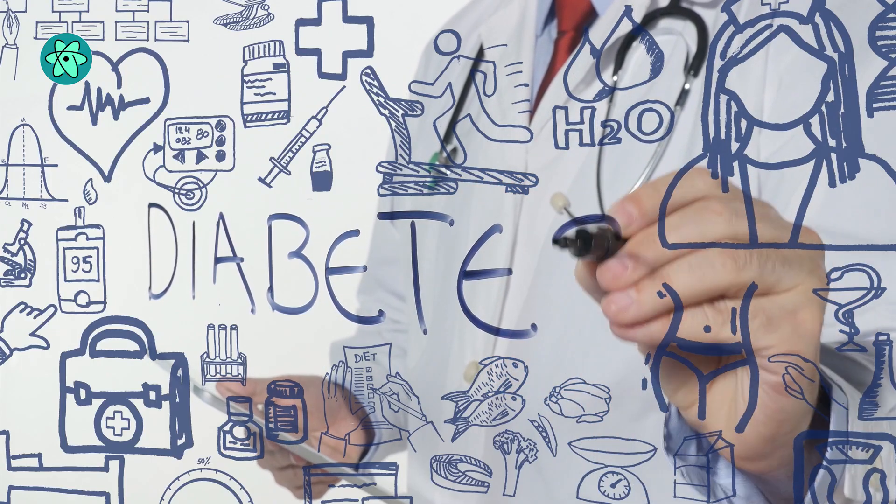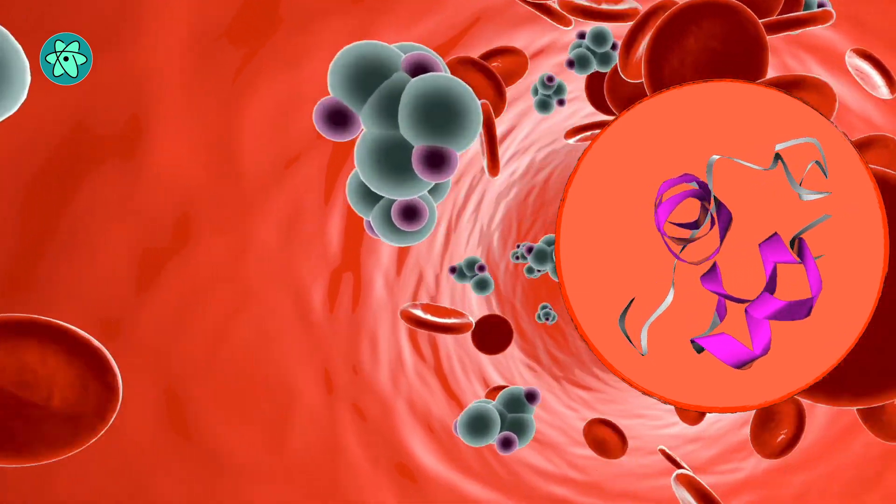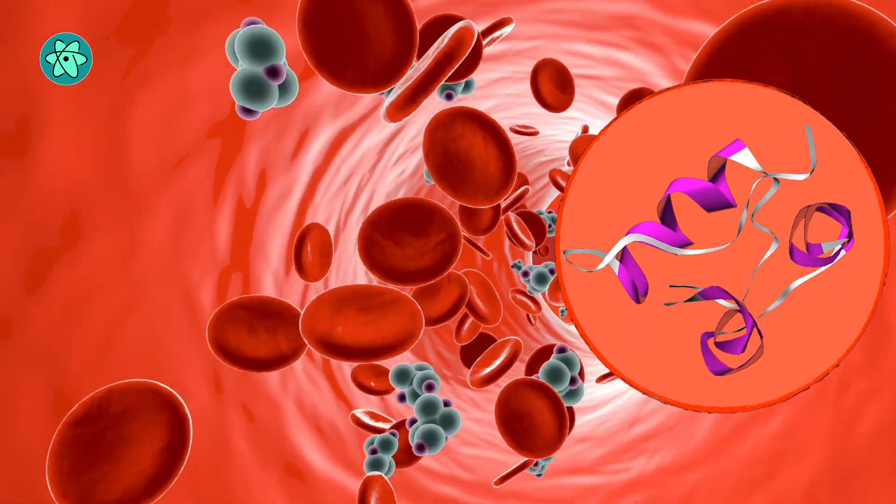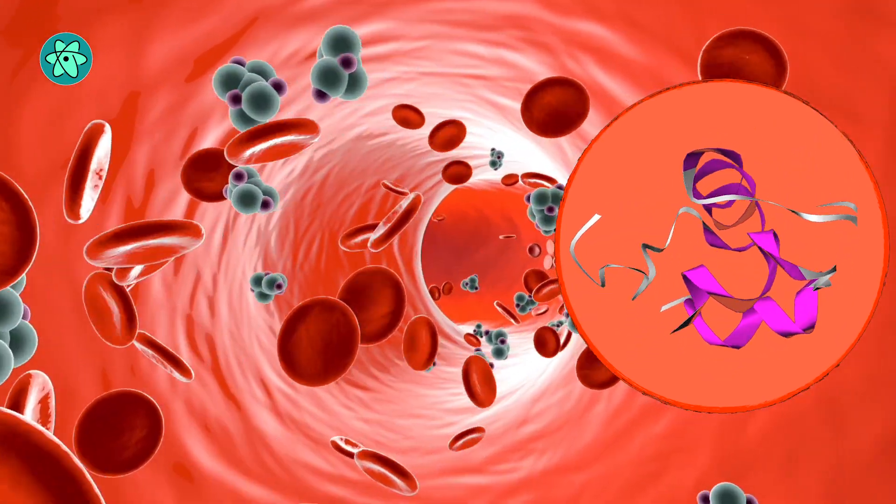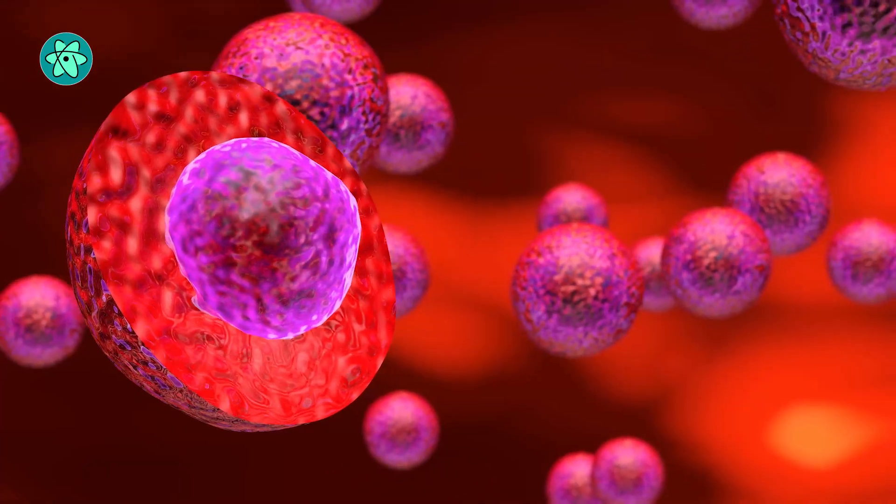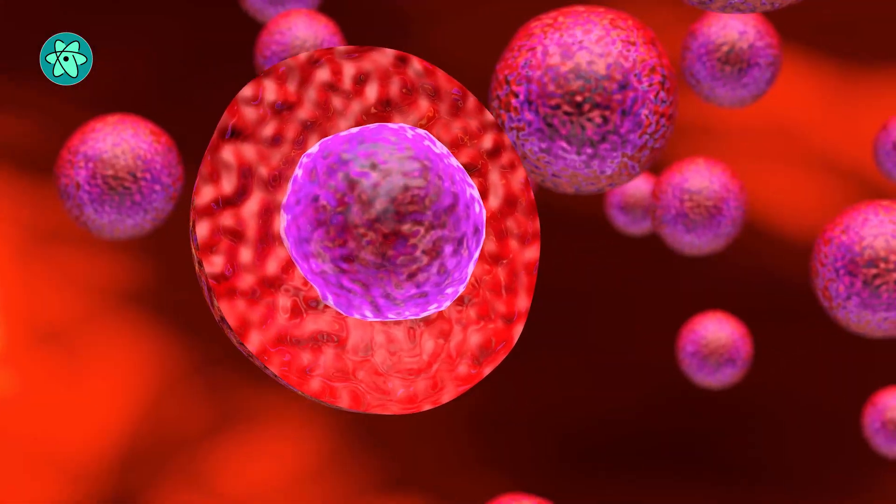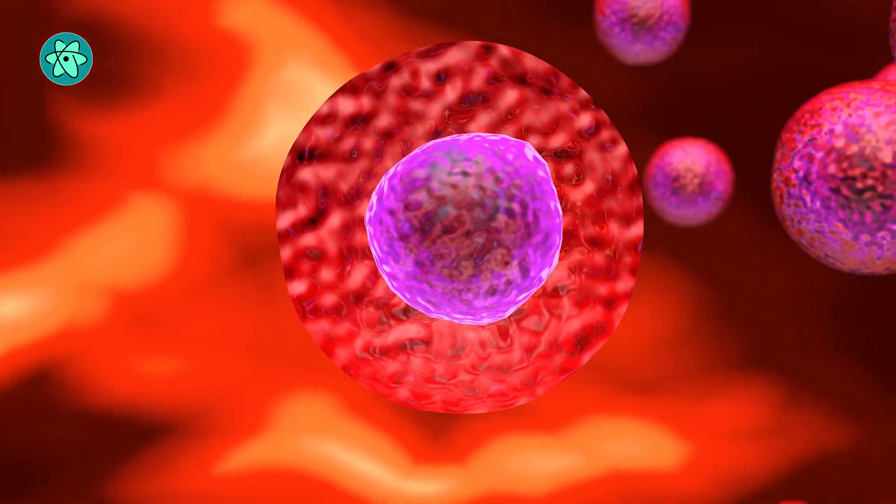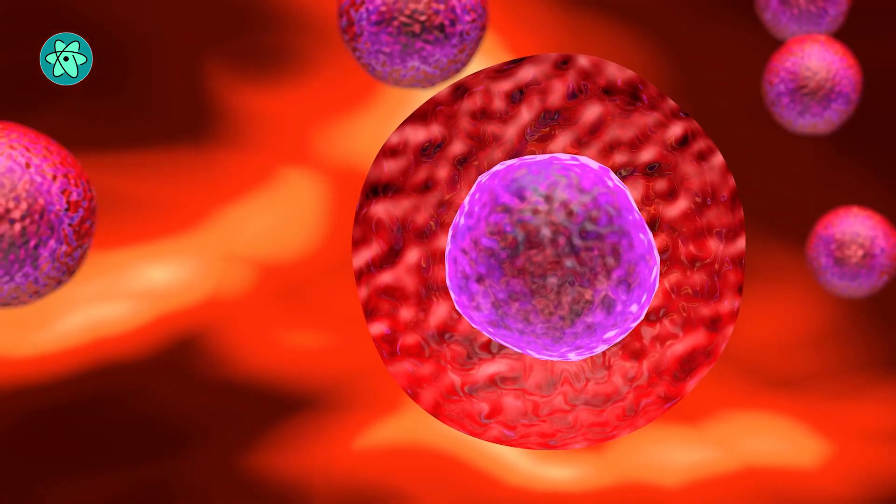Diabetes is characterized by a lack of insulin, the hormone that regulates blood glucose levels and allows the body's cells to access it for energy. An emerging way to treat diabetes is to repair or replace the cells in the body that naturally produce insulin.